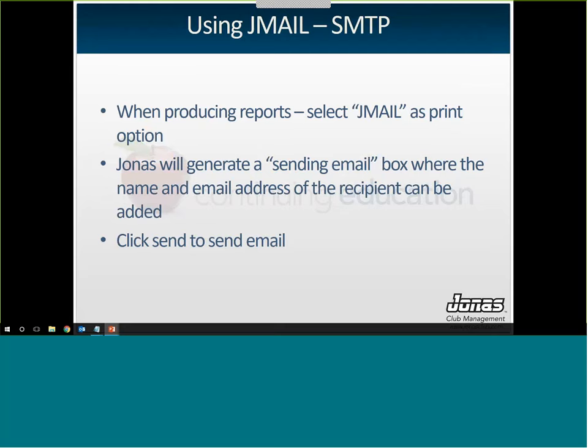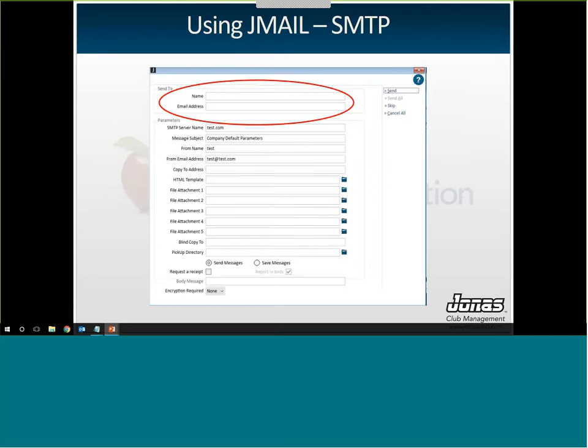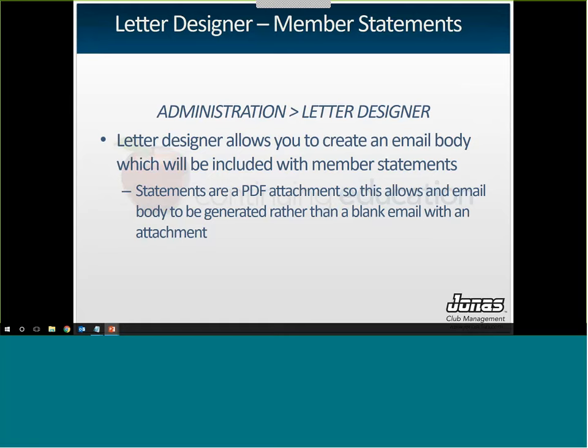When producing reports using the SMTP option, you will still select JML as the print option. Jonas will generate a sending mailbox — a box that looks similar to the JML parameter screen — allowing you to enter the recipient, subject line, and then send the email. You also have the option to attach files and add CC or BCC addresses. Once you're happy, hit Send in the top right. If it cannot communicate with the email server, it will return an error number explaining why.